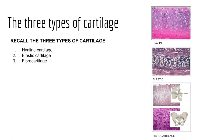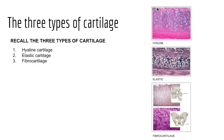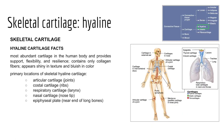Cartilage comes in three types: hyaline cartilage, elastic cartilage, and fibrocartilage. Hyaline cartilage has strength due to collagen fibers and resilience from its ground substance. It's found throughout the skeletal system — at the tips of long bones as articular cartilage, at the tip of the nose, and associated with the anterior aspects of our ribs where it has the special name costal cartilage.